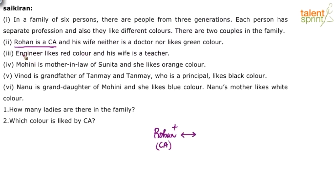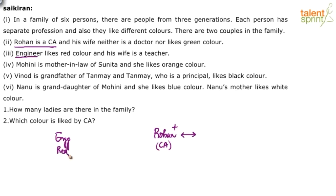Assume they are referring to the same couple. The engineer is the husband because we're talking about the engineer's wife who is a teacher. But in the couple we've already formed, Rohan is the husband and he's a CA. In the third point the husband's profession is engineer, so clearly these are two different couples.